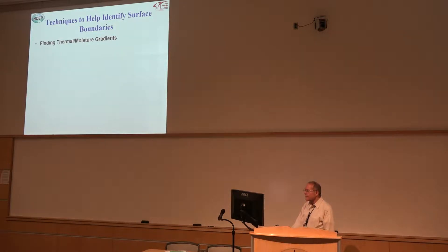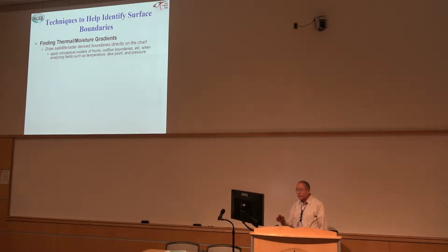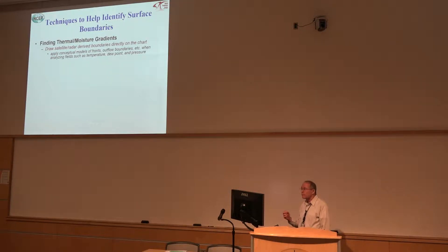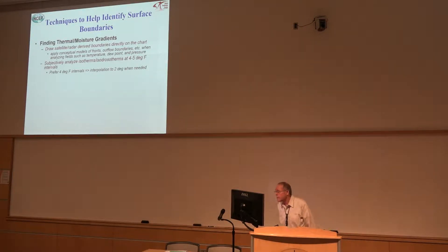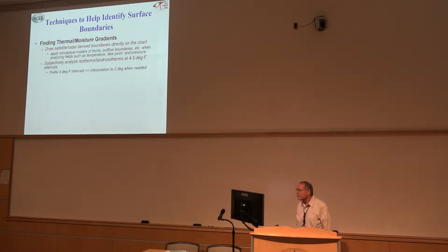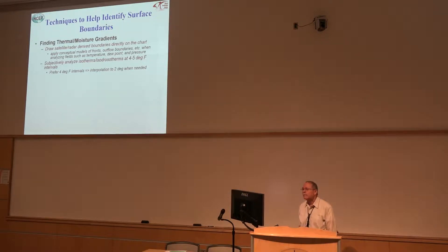First thing we're going to do is try and find thermal and moisture gradients. I don't draw isobars first. I'll look at the satellite and radar and see if I can find boundaries there, and I'll just put it on the chart. I can apply conceptual models of fronts and outflows when analyzing temperature, dew point, etc. Then I'm going to analyze the isotherms and isodrosotherms, particularly the isodrosotherms — I usually do it at four degrees. Some people do it at five, but I prefer four-degree intervals because I can interpolate to two if I need to and get a little more detail.